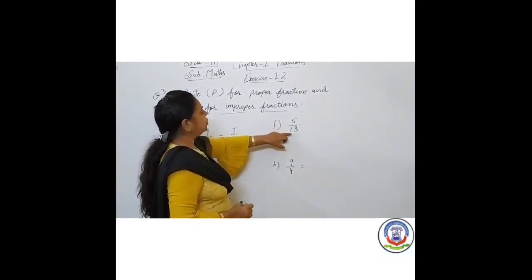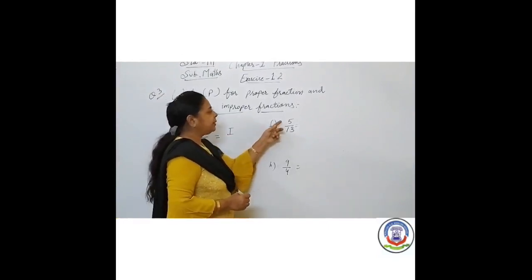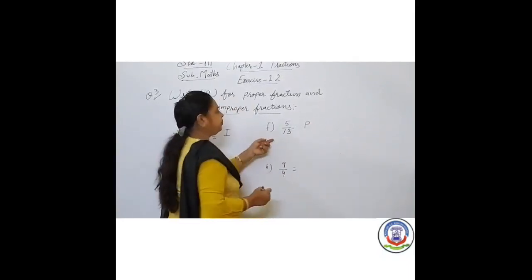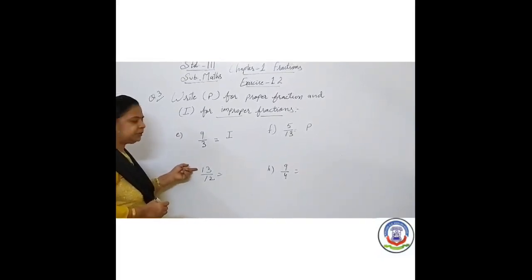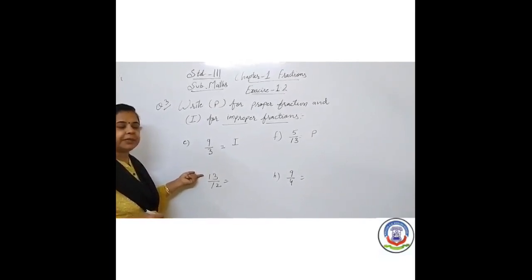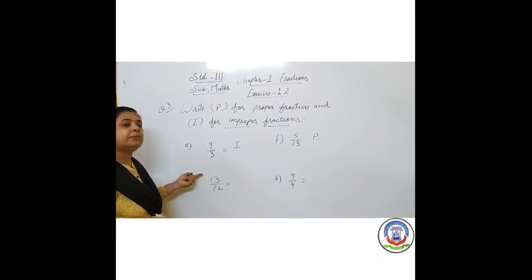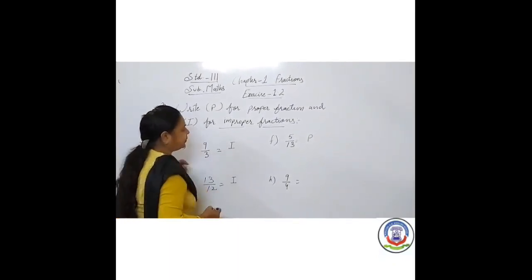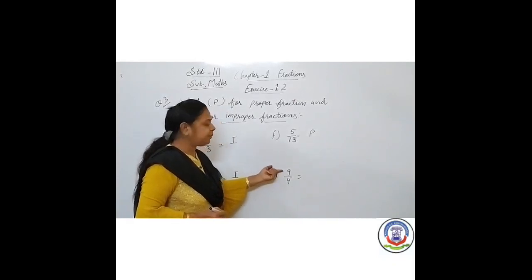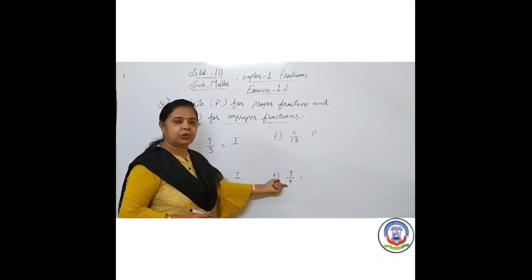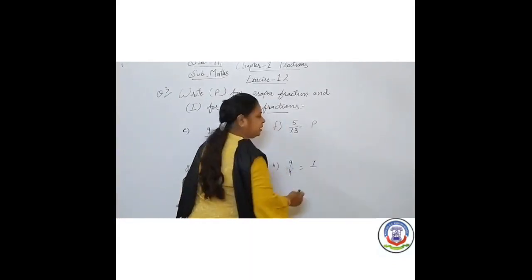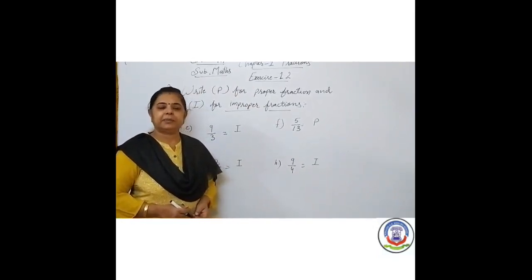Number (f): 5 upon 13 — numerator 5 is smaller and denominator 13 is larger, so this is a proper fraction; we write P. Number (g): 13 upon 12 — numerator 13 is bigger than denominator 12, so when the numerator is greater than the denominator it is an improper fraction; we write I. Number (h): 9 upon 4 — numerator 9 is larger than denominator 4, so this is an improper fraction; we write I. Students, you can solve the remaining numbers in the same way.